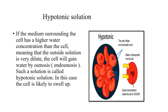Hypotonic solution. From this diagram, you can understand very clearly — this is nothing but dry raisins. You soak them in water. Water is transported into the dry raisins, so because of that, the shape becomes swollen. The entry of water into the dry raisins is called endosmosis. The medium surrounding the cell has higher water concentration than the cell, meaning the outside solution is very dilute, so the cell will gain water by osmosis. That is called endosmosis, and such a solution is called a hypotonic solution.